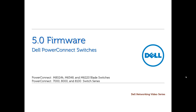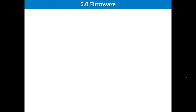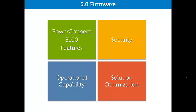The new 10 or 40GB 8100 platform will also support the 5.0 feature set that we will be discussing. This video is intended as a quick introduction to the new features added in the 5.0 firmware release that network administrators will find useful. The enhancements cover a wide range of improvements, but we will focus on the key areas of security, operational capabilities, solution optimization, and some specific support designed for the PowerConnect 8100 switch series.